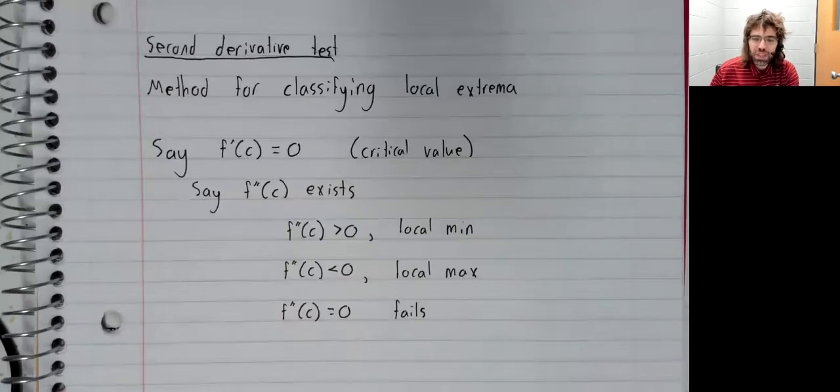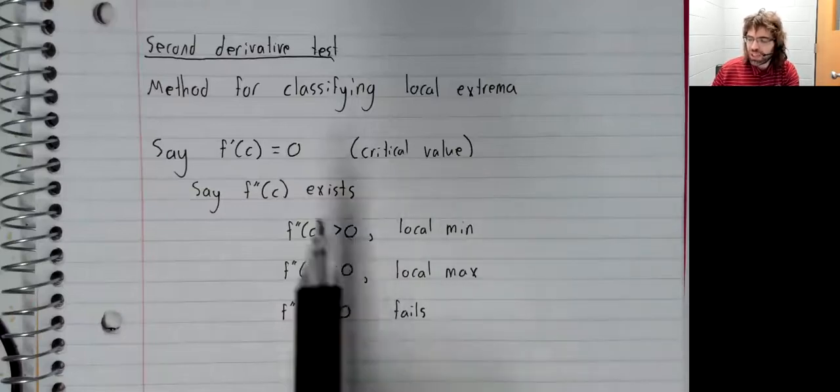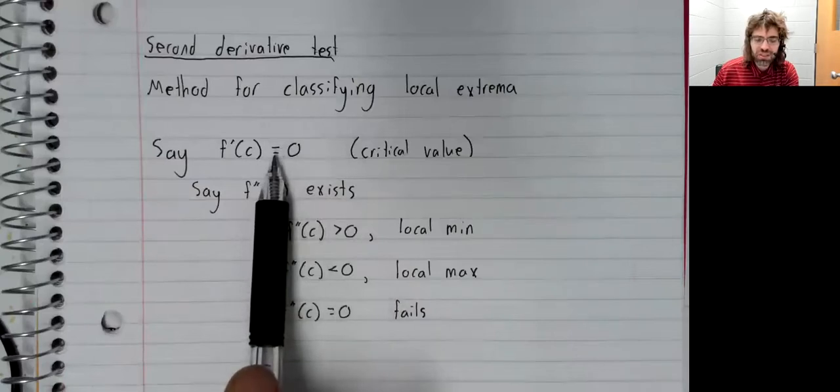It's always seemed to me like it's kind of objectively worse than the first derivative test. You can only use the second derivative test at some critical values,